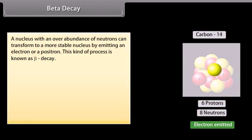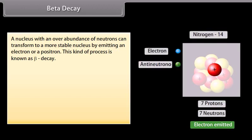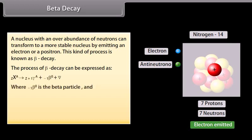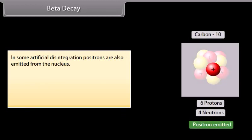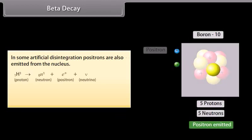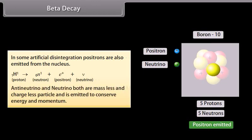Beta decay. A nucleus with an overabundance of neutrons can transform to a most stable nucleus by emitting an electron or a positron. This kind of process is known as beta decay. This process of beta decay can be expressed as... where is the beta particle and is the anti neutrino. For example, in some artificial disintegration, positrons are also emitted from the nucleus. Anti neutrino and neutrino both are massless and chargeless particle and is emitted to conserve energy and momentum.